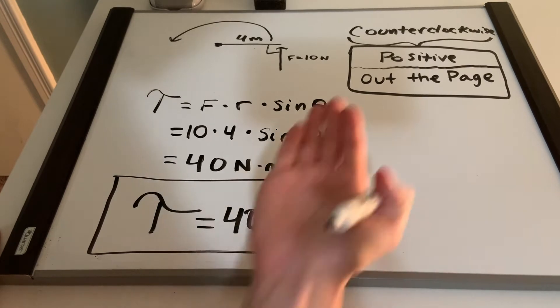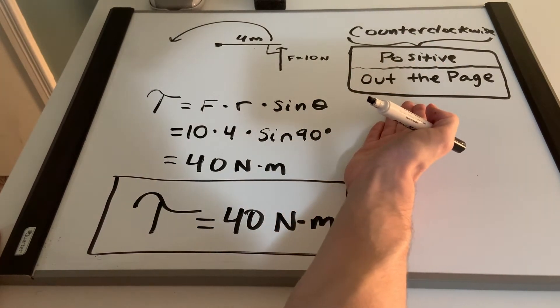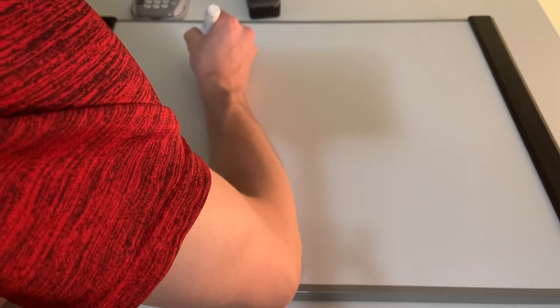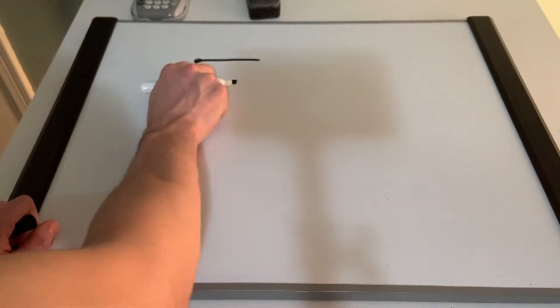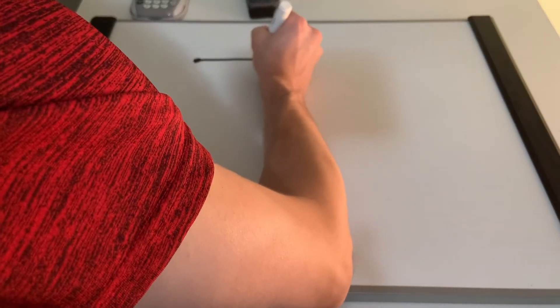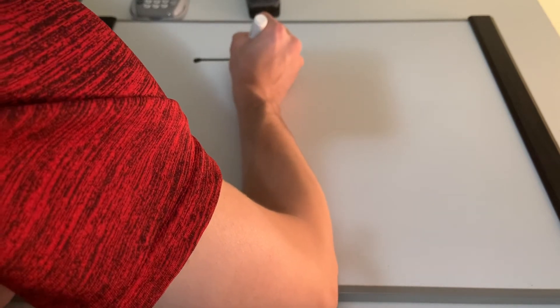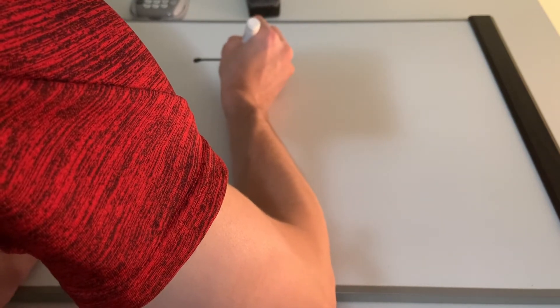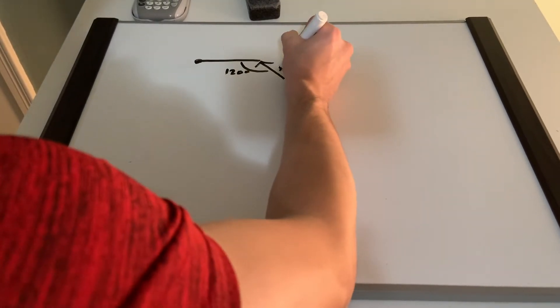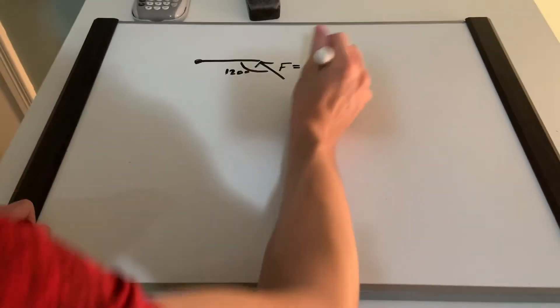So we have our magnitude and we have our direction for part A. Now I'm going to erase the board and get to part B. For part B, we are going to need vector knowledge. I'm going to go ahead and draw the diagram. Here's the hinge and there's the actual door, and we apply a force at an angle of 120 degrees. This is the given information. So take this force vector — we know that it has a magnitude of 10 newtons.